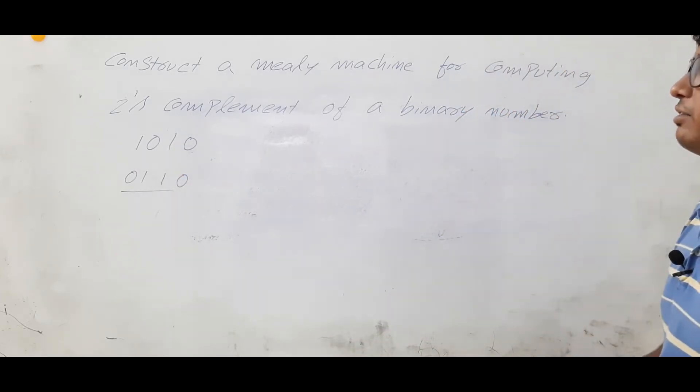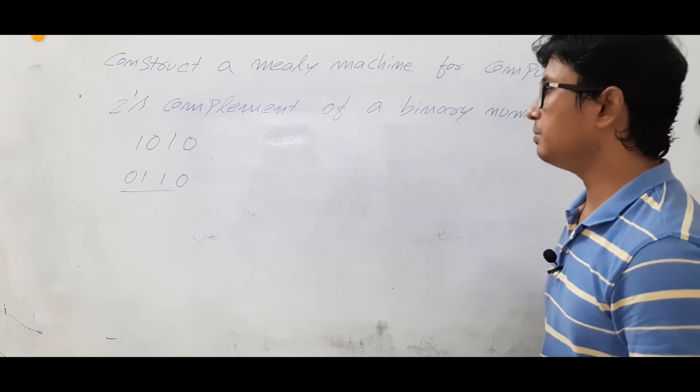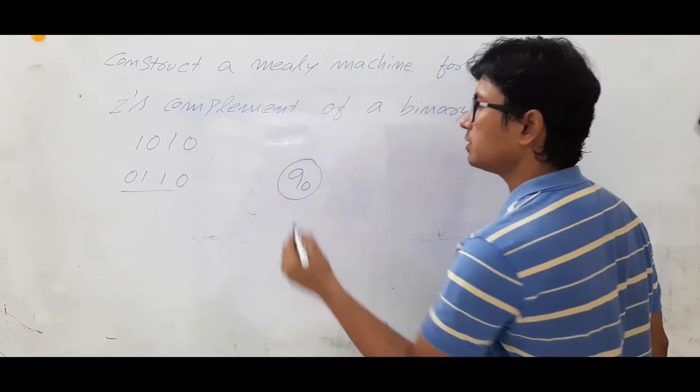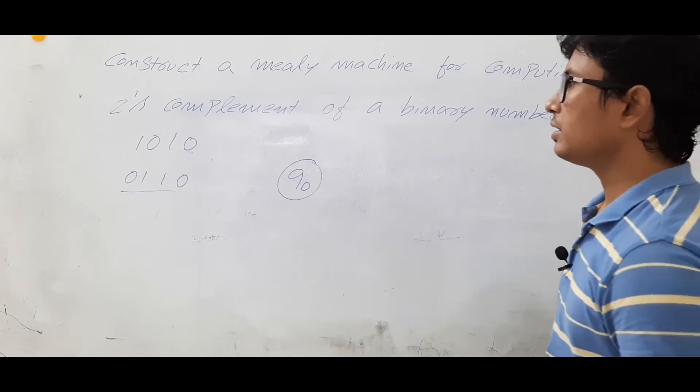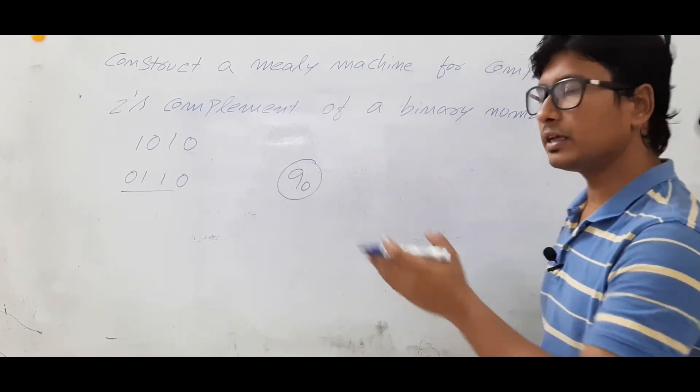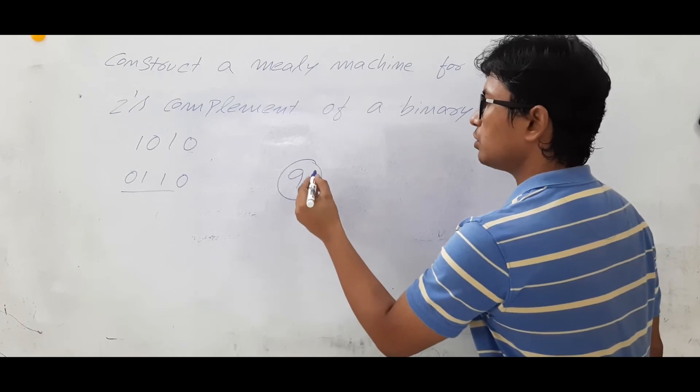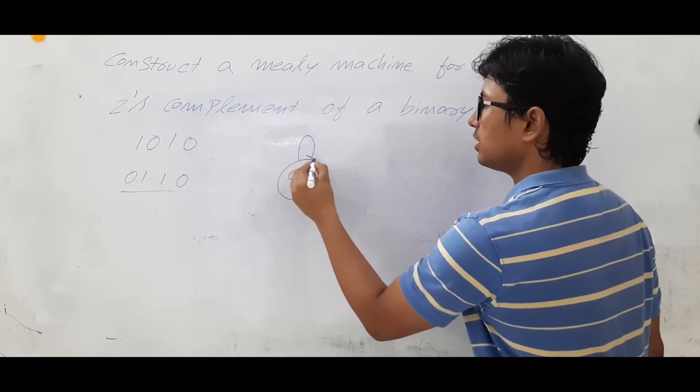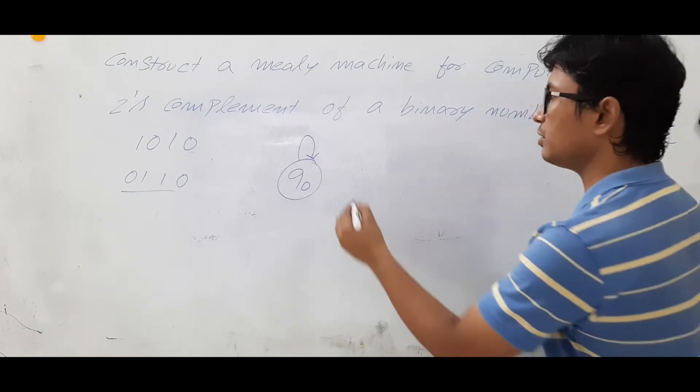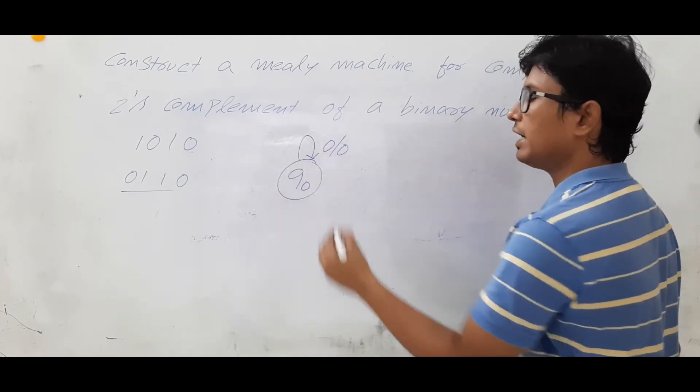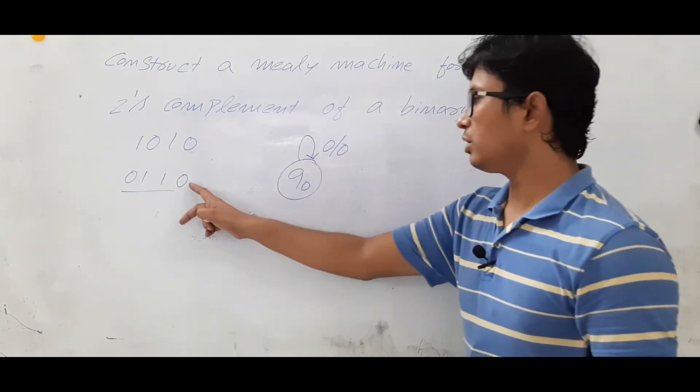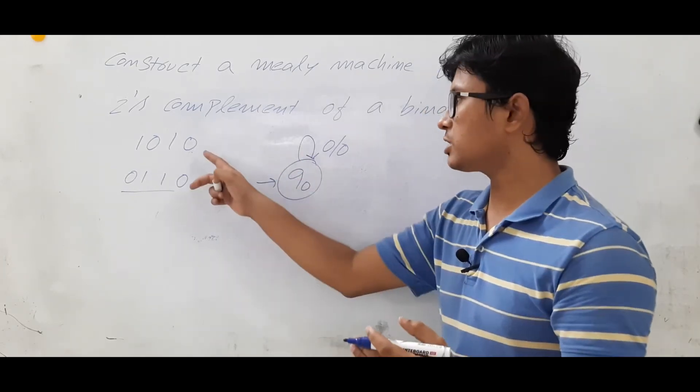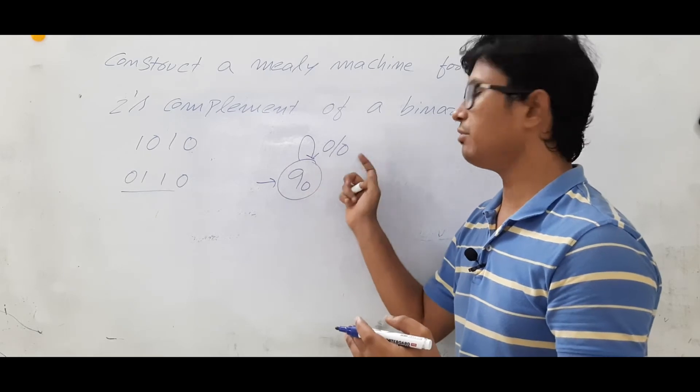So with this one I will construct a Mealy machine. I am in initial state q0. I am going from the LSB, leftmost bits. So if I get any number of zeros, I will get the output as 0 only. q0, I am in initial state q0, when I am reading from the LSB any number of zeros I am getting, I will keep it as zeros.